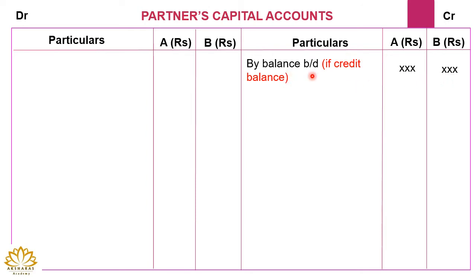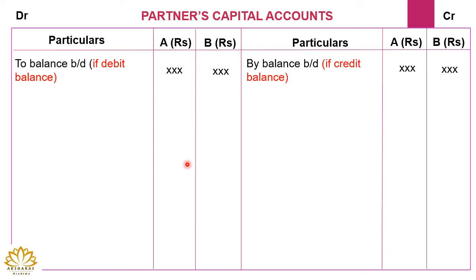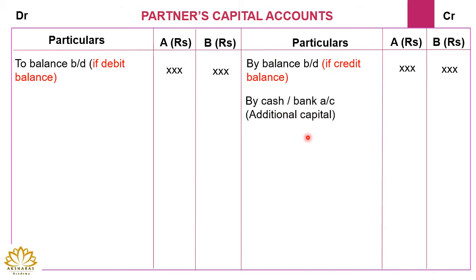If the opening capital has a debit balance then it will be shown on the debit side of the capital account, written as 'To Balance Brought Down.' A's capital will be shown under A's column and B's capital under B's column. The next entry is for additional capital — if during the year a partner introduces additional capital, the journal entry will be cash or bank account debited to A's or B's capital account. This additional capital is credited to the capital account, written as 'By Cash or Bank.'